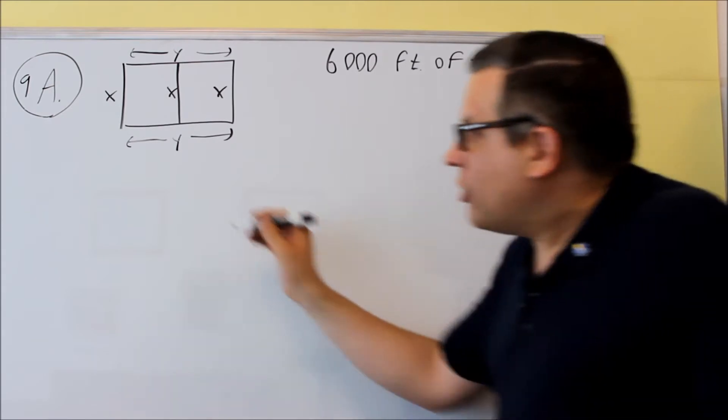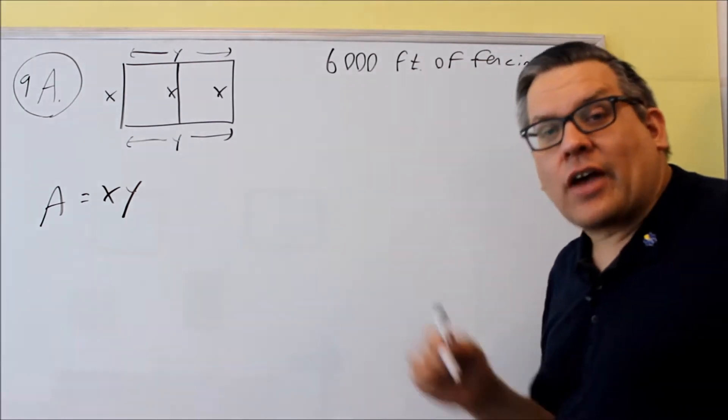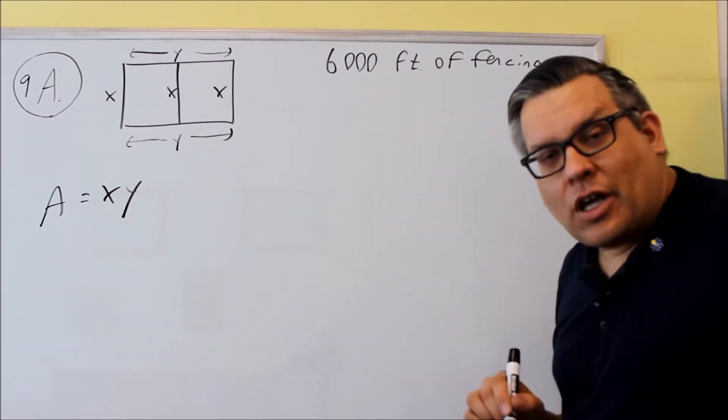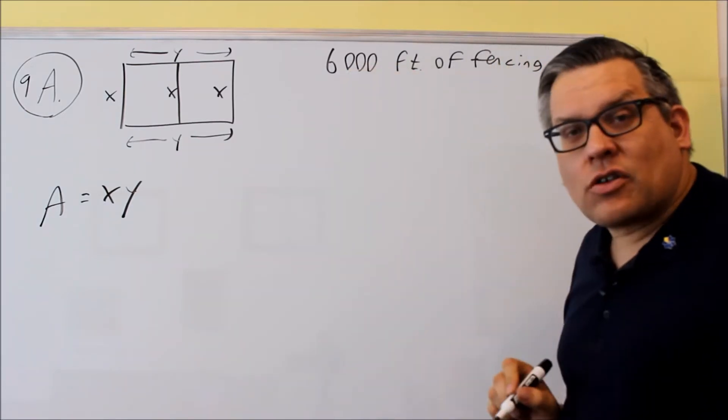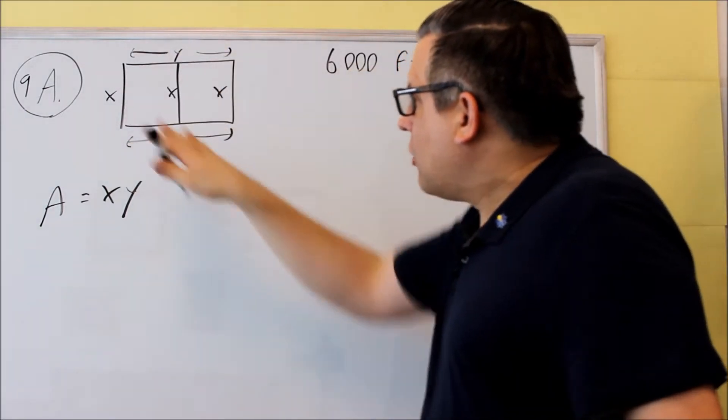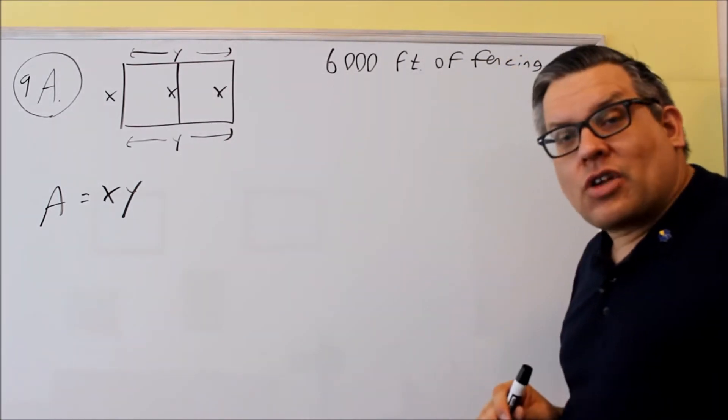Now here's the two formulas that we're going to use. The first one is area because it's asking me for the maximum area that can be enclosed. The other one is going to have to involve the 6,000 feet of fencing. I need to add up all of the variables that I see there and that should add up to 6,000. What do I have here? I have 3x's plus 2y's equals 6,000.